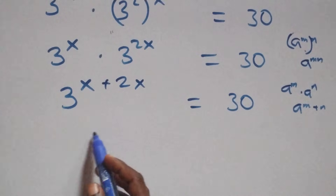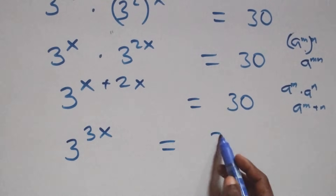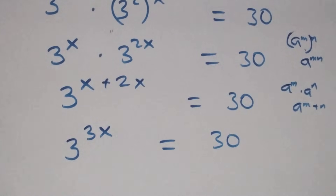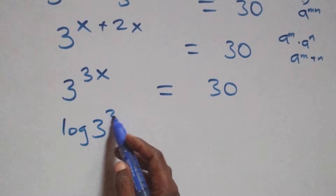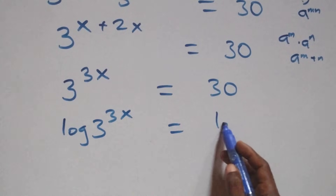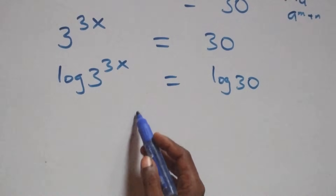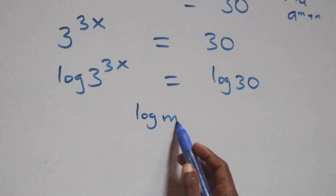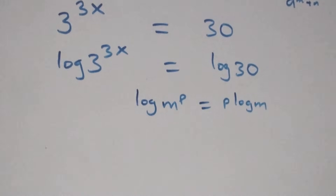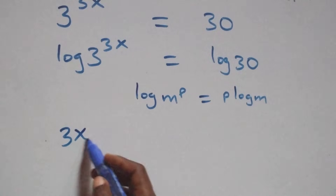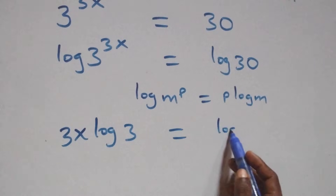Here we have 3 raised to the power x plus 2x equals 3x, so 3 raised to power 3x equals 30. We take the log on both sides, giving log 3 raised to the power 3x equals log 30. We apply the power log rule: log m raised to power p equals p log m.